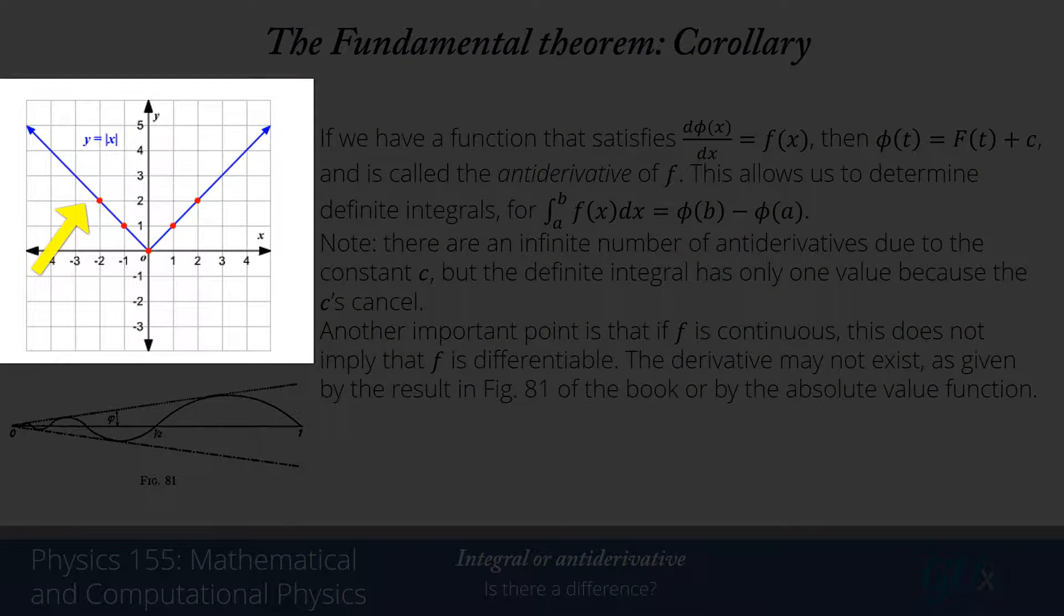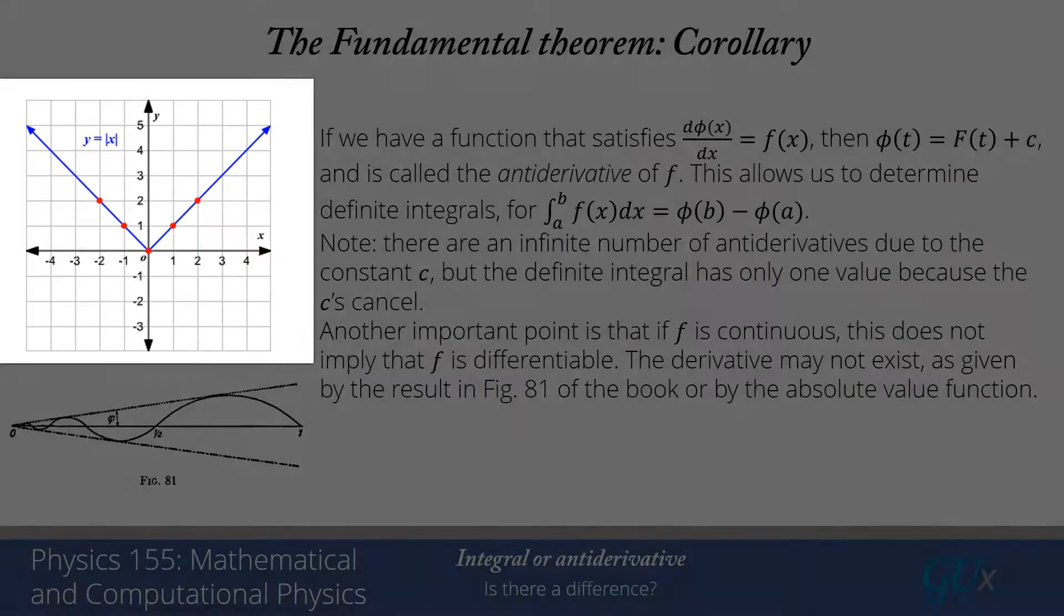Let's start with the absolute value. You can see the slope on the left-hand side is minus 1. The slope on the right-hand side is plus 1. And at the point x equals 0, the slope is not defined because the limit as I approach from negative x will give me minus 1. The limit as I approach from positive x will give me plus 1. And I don't know which one to pick.